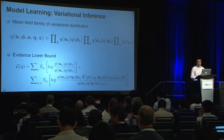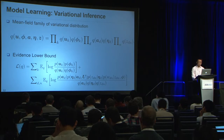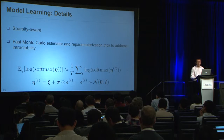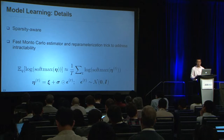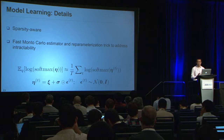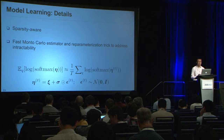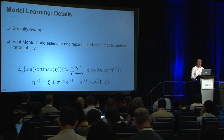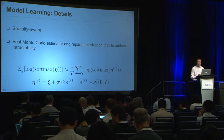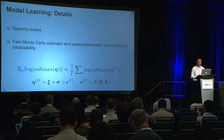We assume a mean-field family of variational distribution and adopt variational inference to learn the model, aiming to maximize the evidence lower bound. To further speed up inference, we exploit intrinsic sparsity in the modeling — a single document usually covers only a small number of topics, and a topic is typically characterized by only a few words in the large vocabulary. We also use a Monte Carlo estimator and the reparameterization trick to approximate the intractable expectation. For more technical details, you can refer to the paper.